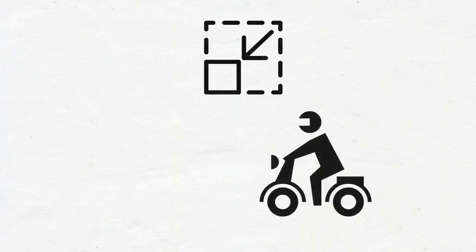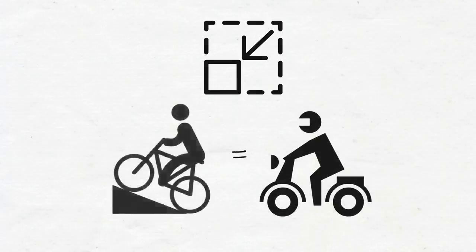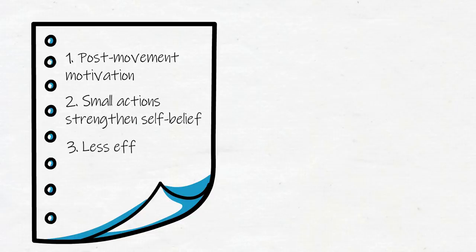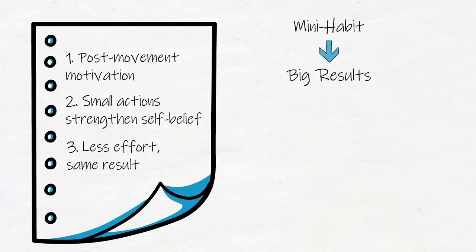When you scale back a habit, it's like you're retrofitting your bike with a mini motor that allows you to go the same speed as someone pedaling up the hill, but you're not breaking a sweat. The three mini-habit powers—post-movement motivation, increased belief in oneself, and less effort required to ingrain a habit—are what allow a mini-habit to produce big results. But you'll fail to see big results if you don't abide by these two mini-habit rules.